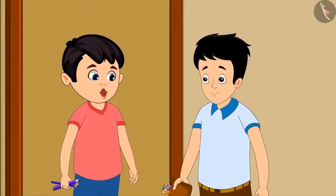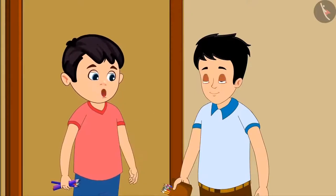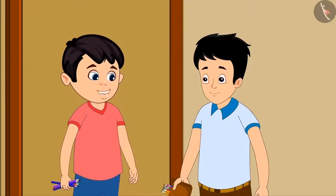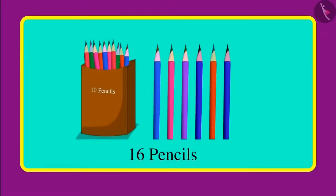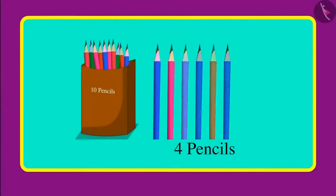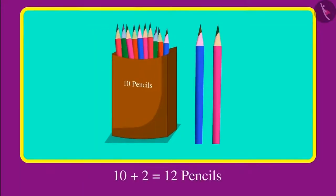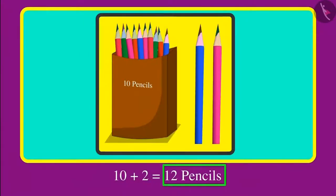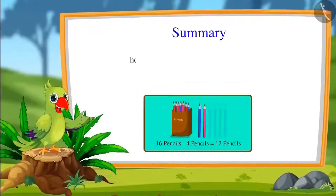Now you gave me four pencils, so you are left with fewer pencils. Can you tell me how many pencils you have right now? First of all I had 16 pencils, out of those 16 I gave you four pencils. So out of 16 pencils if four pencils are removed, then the remaining are 10 and two, that is 12 pencils.